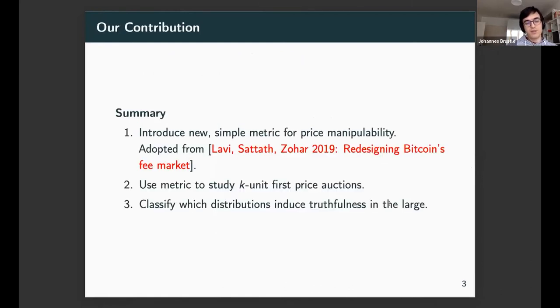We can summarize our contribution in the following way. First, we introduce a new simple metric for price manipulability, actually not totally new but adopted from a recent paper by Lavi, Sattath, and Soar, who use it to argue a new design of the Bitcoin fee market improvement. We will use a similar metric to study simple K-unit first-price auctions. In particular, we will try to classify families of distributions by whether they induce truthfulness in the large with respect to our metric. We will see a very surprising division point between where families of distributions go from being non-truthful to truthful.